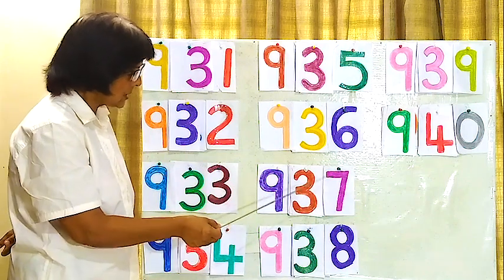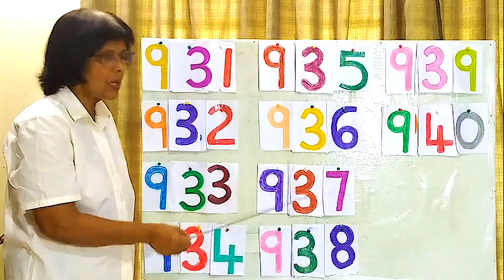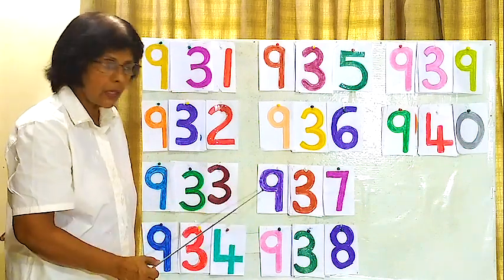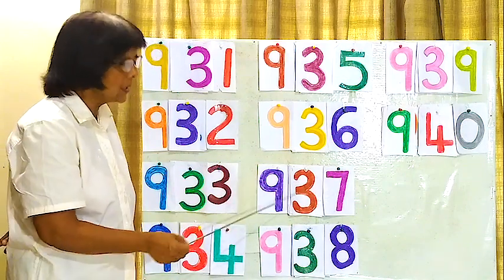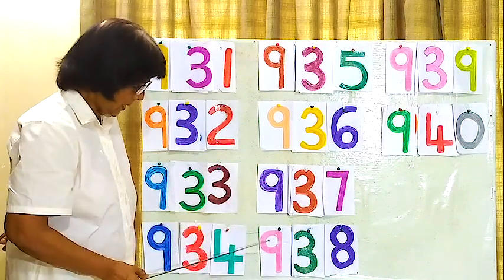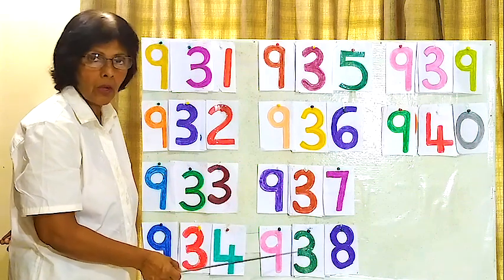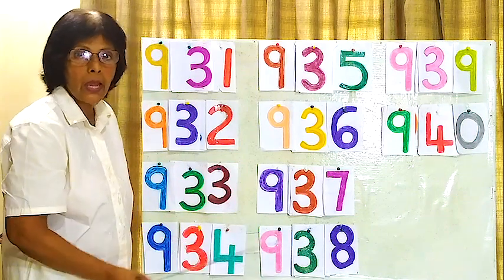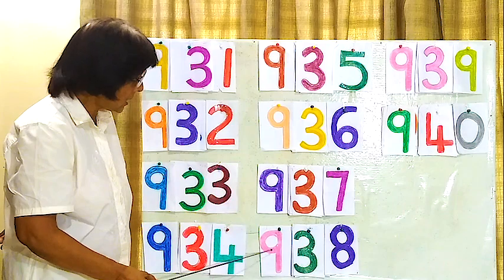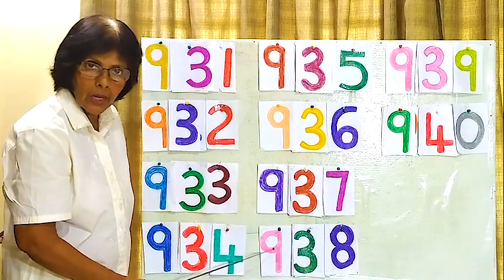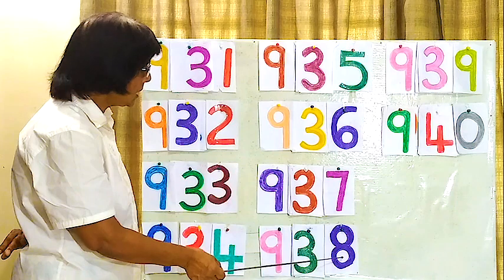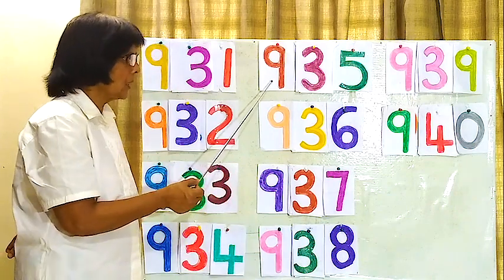Here, 937, 937, 937, 937, 937. Next one, 938, 938, 938, 938.